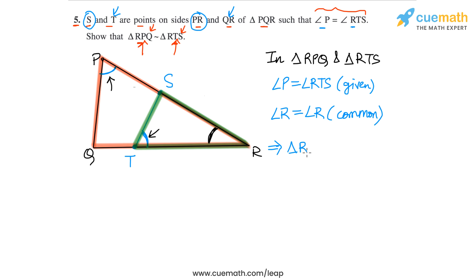So triangle RPQ will be similar to triangle RTS, and the reason is the AA similarity criterion. So with this we have proven the similarity of the two triangles and that completes question number five.